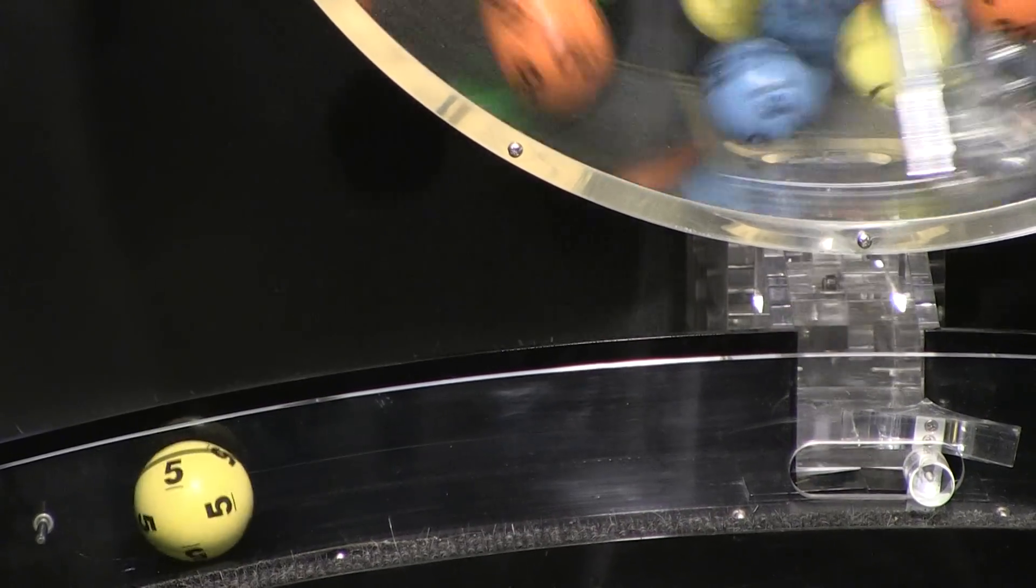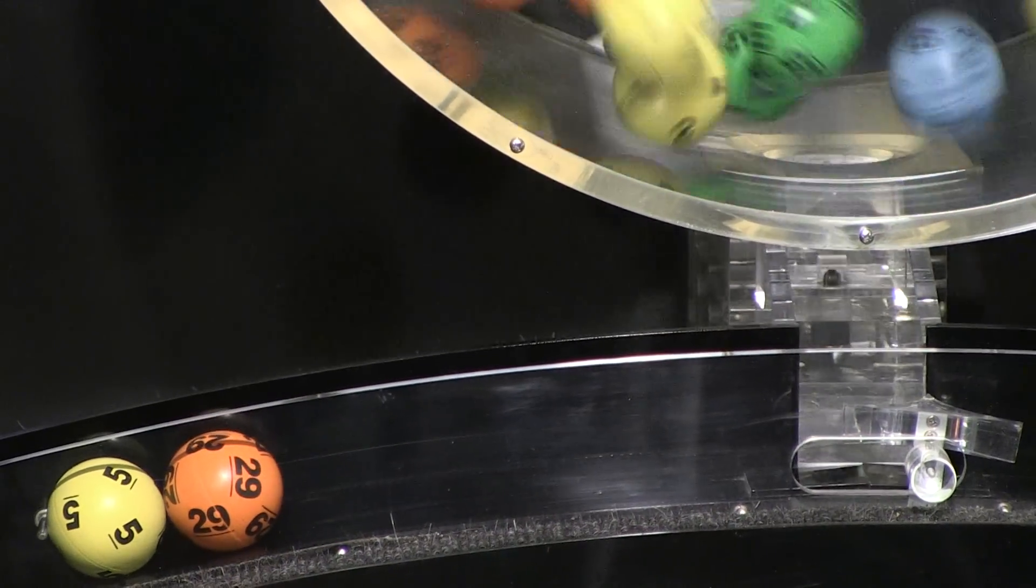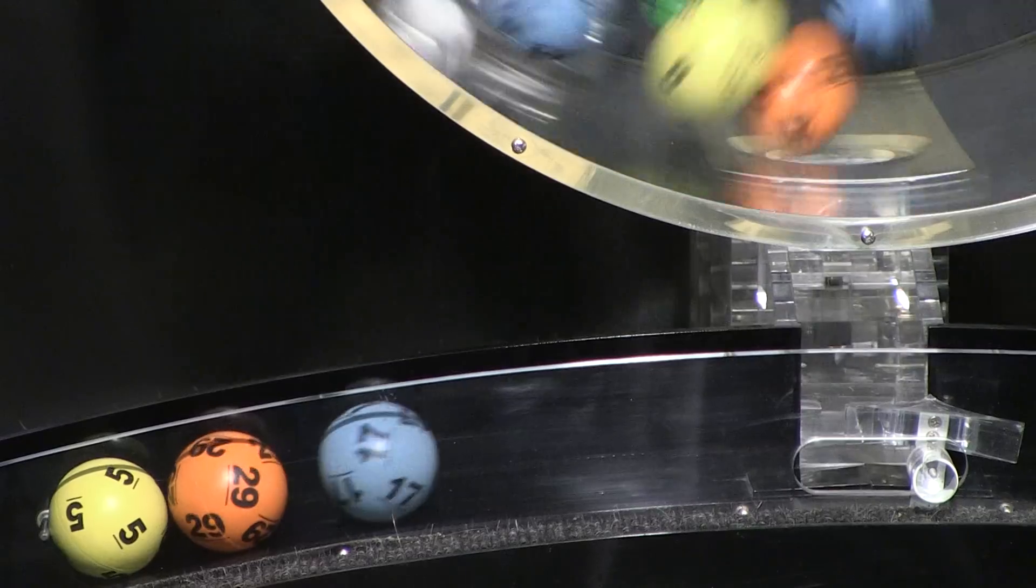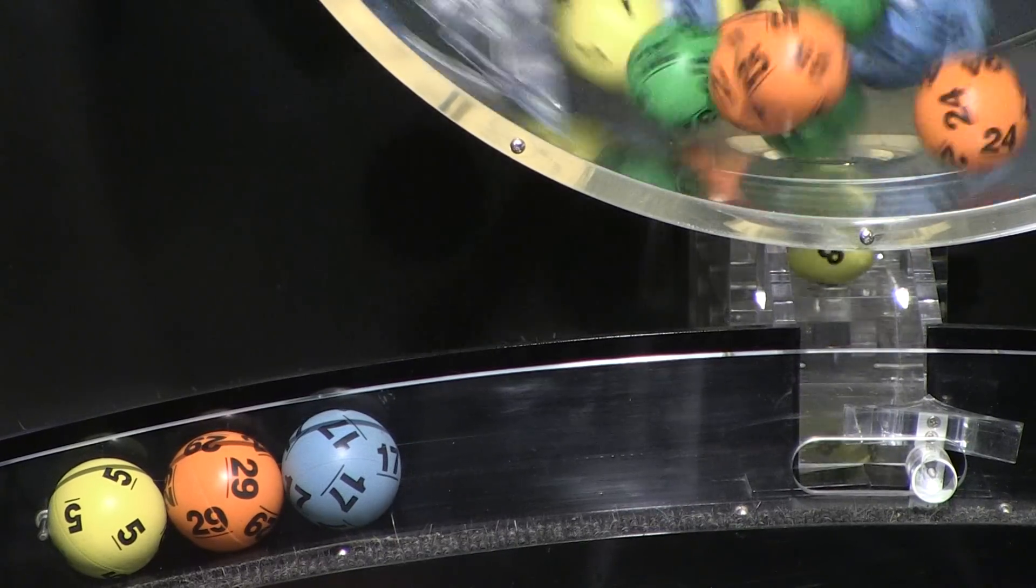Our first number up is number 5. Following that we have number 29. And here comes number 17. Up next is number 8. And the final ball in this sequence is number 22.